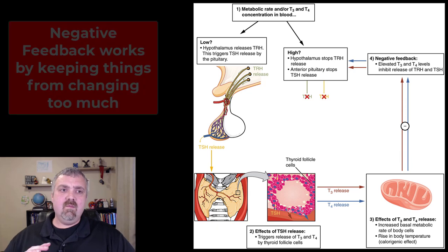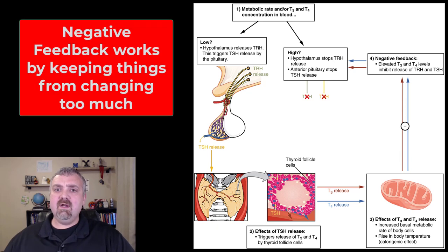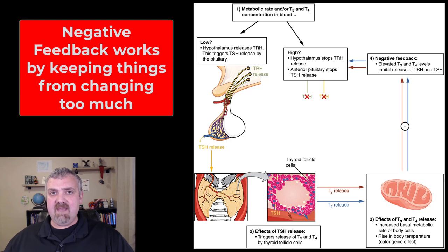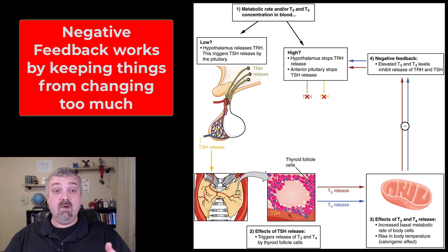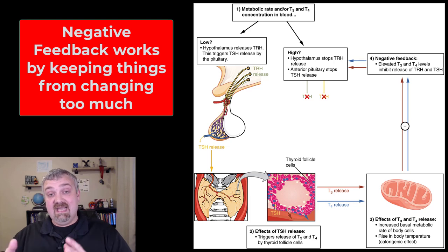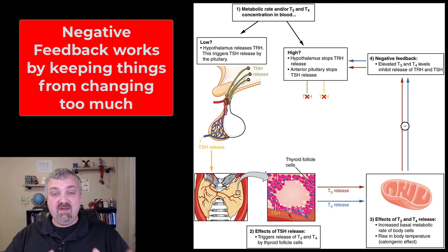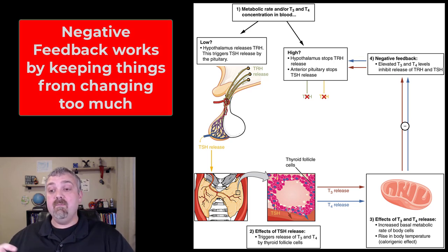But other than that, almost every other hormone we're going to talk about relies on negative feedback. Negative feedback means that there's a change in the body — a change to a concentration of a hormone — and the response will be to negate that change, to keep it from getting out of control.